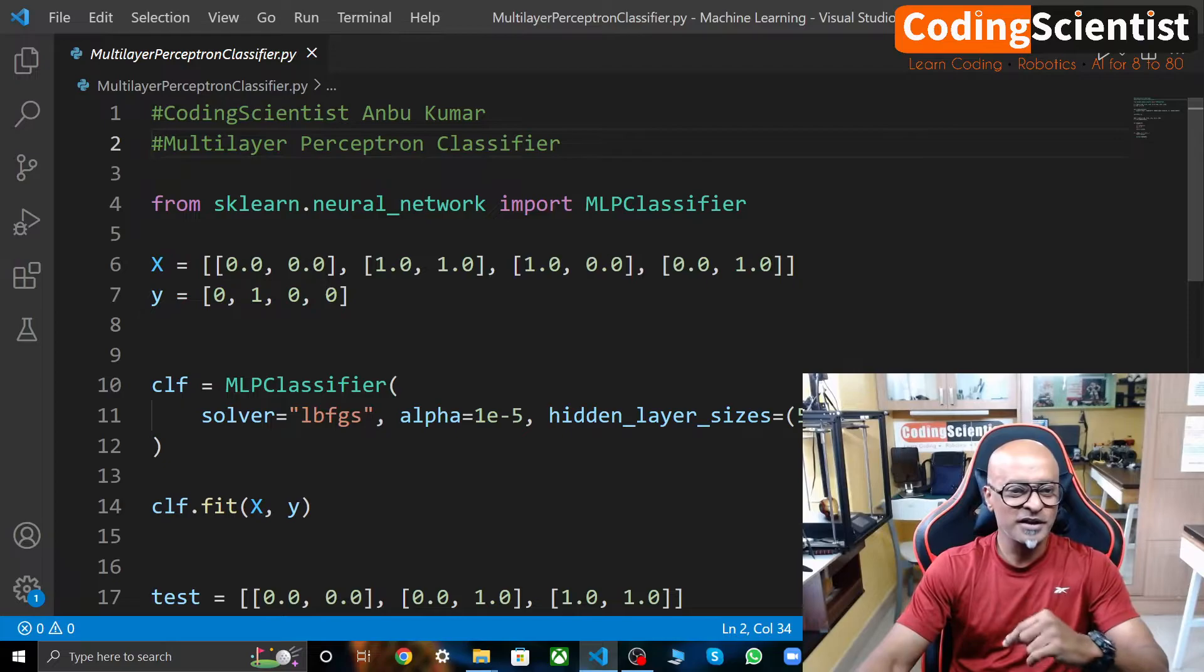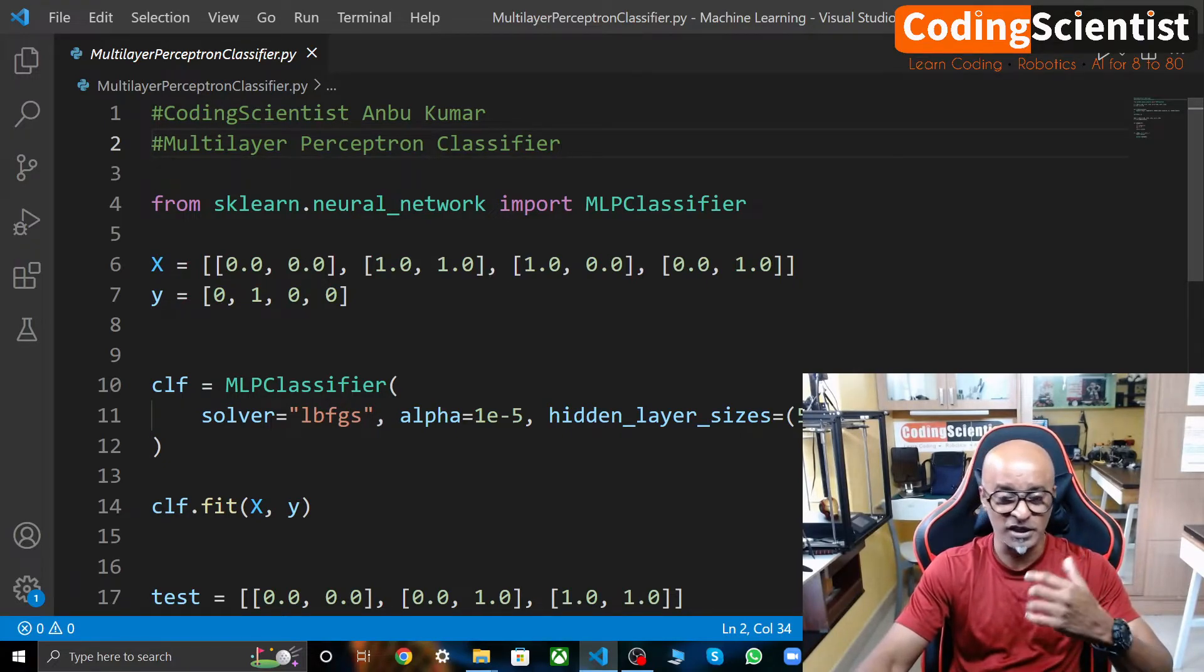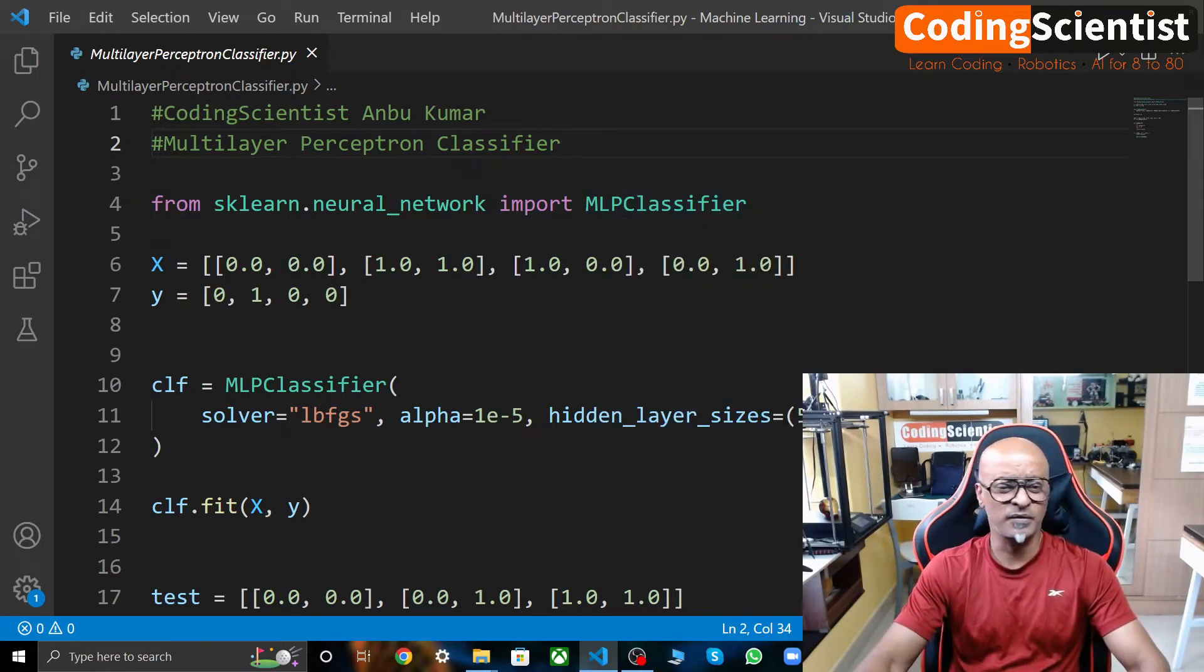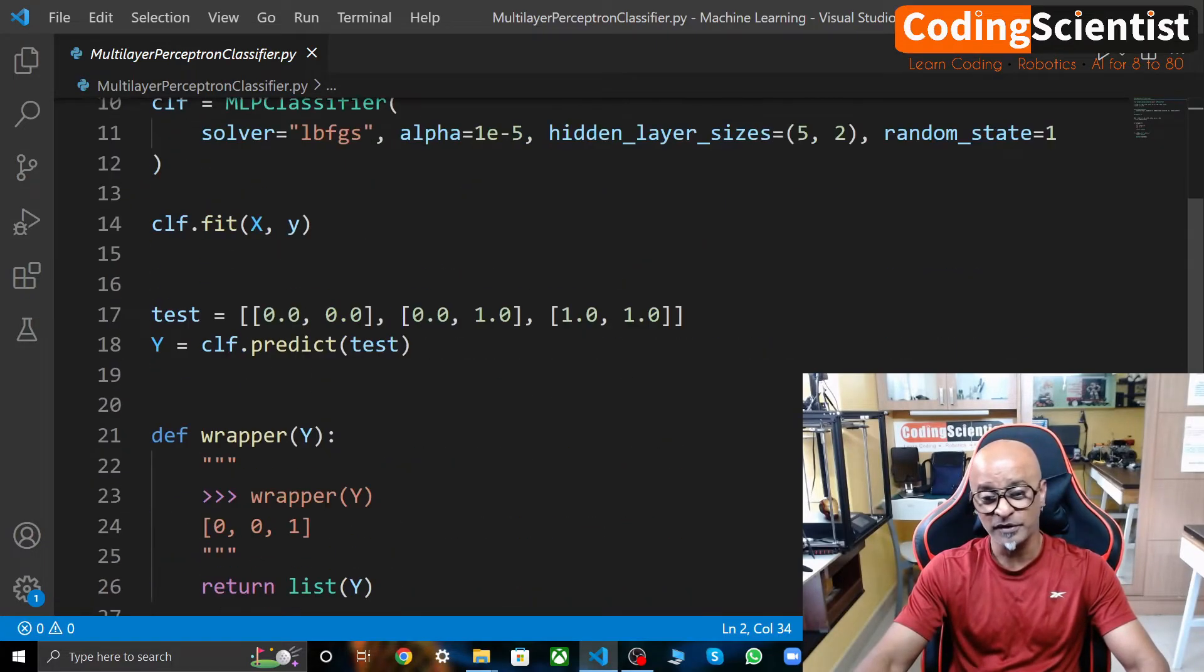But if I have to explain this using the scikit-learn neural network library, which has the MLP classifier, it's thousands of lines of code within this built-in library itself.